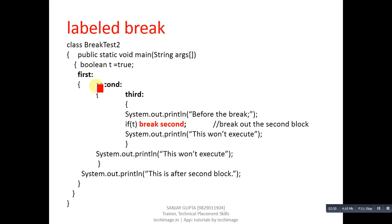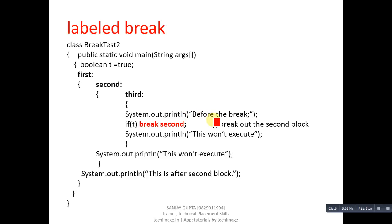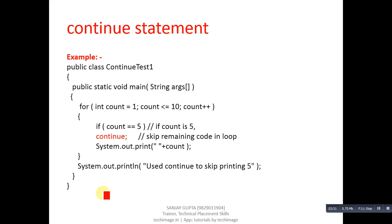Control will come out from the second block and move directly to the println statement that comes after the second block. So that statement will be printed after termination of the second block. Inside the third block, 'before the break' will be printed on the console. So the program produces two outputs: 'before the break' and 'this is after second block'. That is the use of labeled break — you can define various labels and use labeled break to exit any particular one.